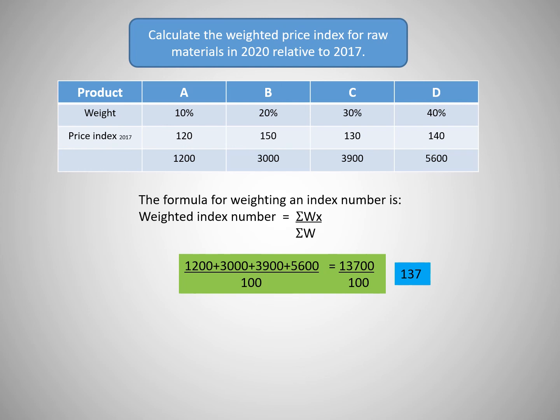Compared to the base year of 2017, when the index number equaled 100, the cost of making the product has risen to an index number of 137. This shows a 37% increase.